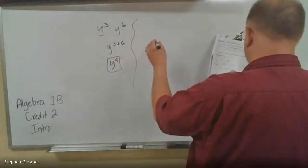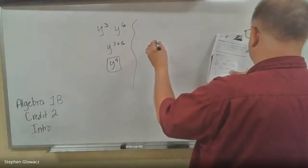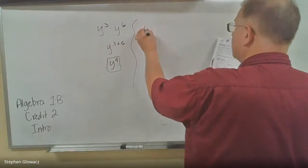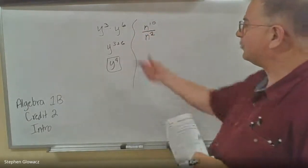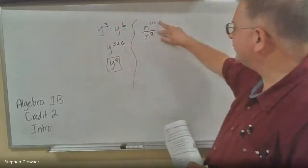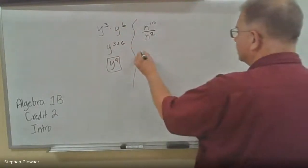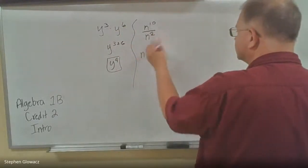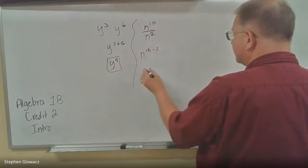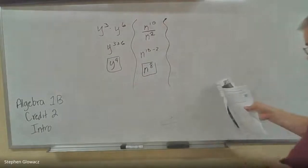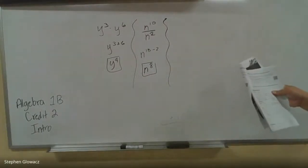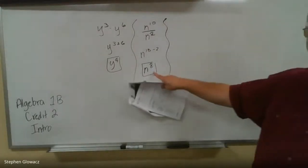Next is number 8. We have N to the 10 over N to the second. So when we multiply, we added the exponents. When you divide, you subtract the exponents. So top minus the bottom, 10 minus 2, and that would be 8. So N to the 8th power. And that was number 8, appropriately enough.